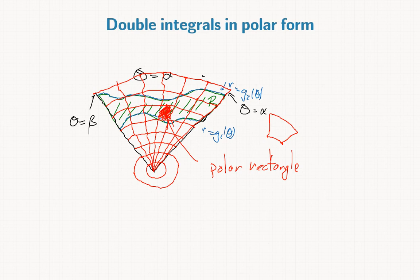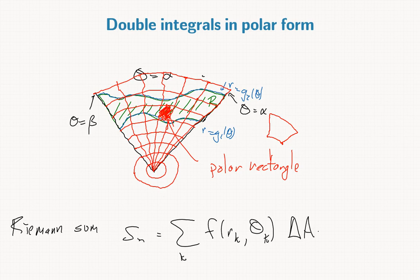If we're integrating in polar coordinates, our Riemann sum will be S_n is sum over k, where k are the polar rectangles, f(r_k, theta_k), and then the area in the kth polar rectangle.